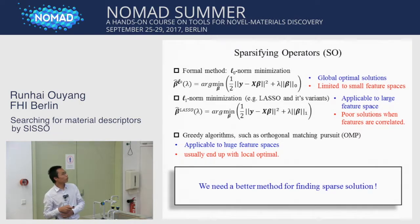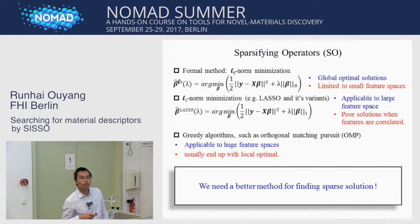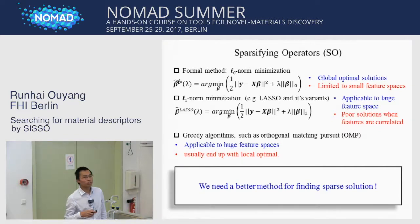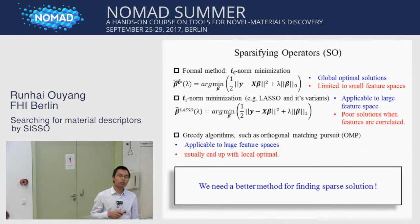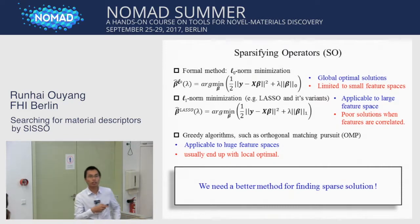Question from audience: to connect to the previous talk — your second point about poor solutions when features are correlated, was that related to the previous feature, where there was multi-collinearity with x1 and x2? Speaker: Yes — here 'correlated' means a coherent feature space, so the features are highly correlated, meaning non-orthogonal. Then it's difficult to distinguish which features to select, and there is a problem identifying the best solution.